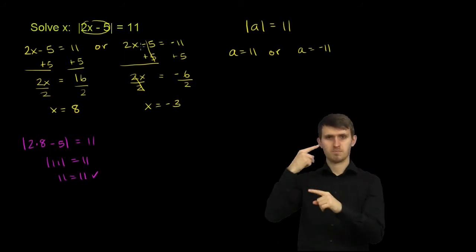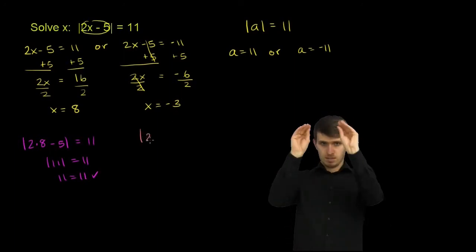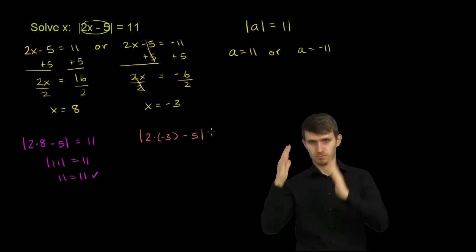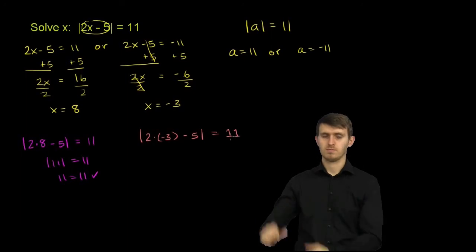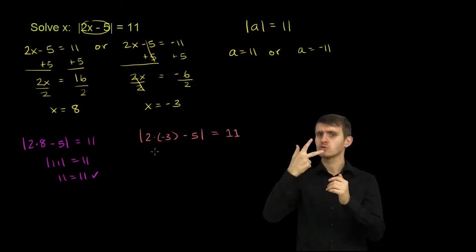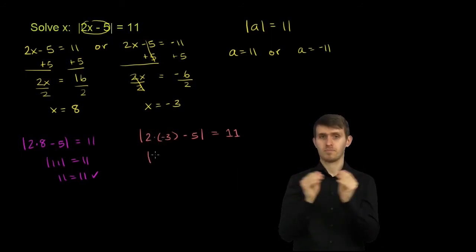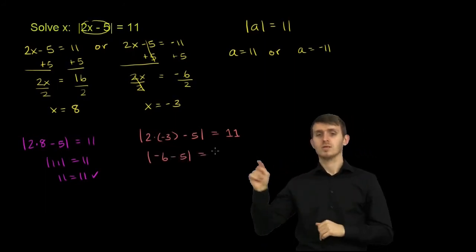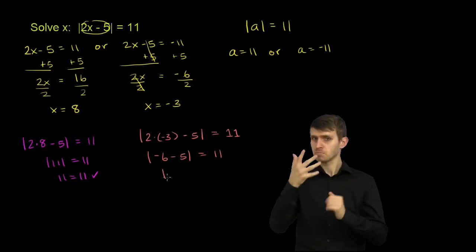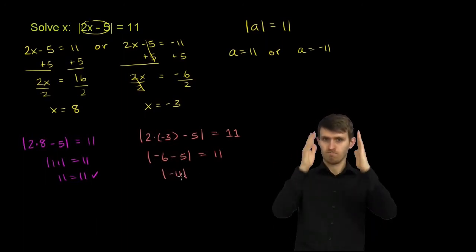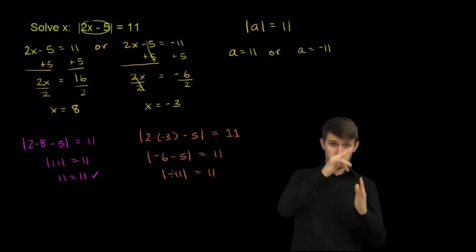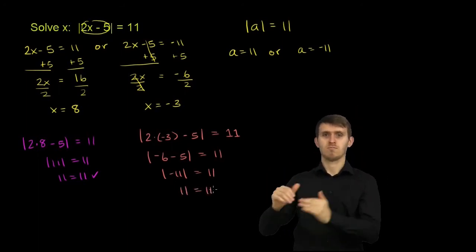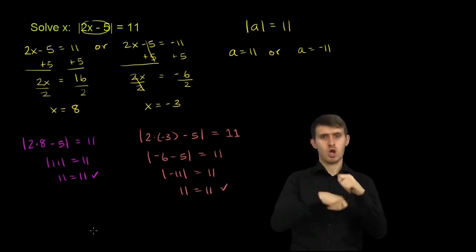Now let's try it with x equal to negative 3. We get the absolute value of 2 times negative 3 minus 5, which should equal 11. 2 times negative 3 is negative 6, minus 5. The absolute value of that should equal 11. Negative 6 minus 5 is negative 11, so the absolute value of negative 11 should equal 11 — and it is. The absolute value of negative 11 is 11, so we get 11 is equal to 11. They both work.